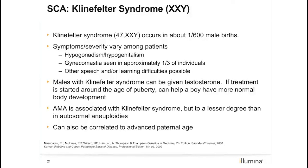Klinefelter syndrome, or 47XXY, occurs in approximately 1 in 600 males. There is a correlation with both advancing maternal and paternal age for Klinefelter syndrome. Features of this syndrome can include developmental delay and small genitalia with enlarged breast tissue at puberty. Individuals may have decreased fertility as well. Early identification and hormonal treatment at puberty may aid with development.